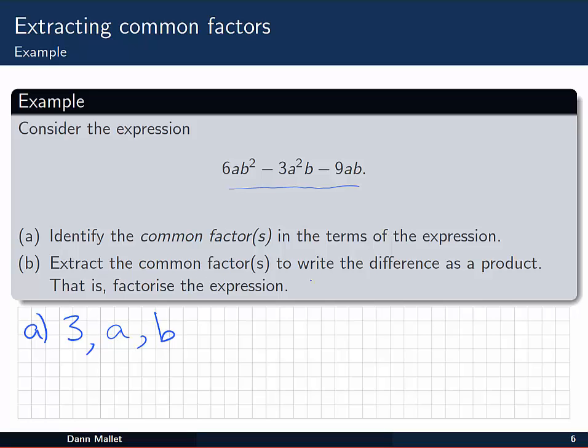Now we're asked to extract the common factors to write the difference as a product. You can do this the same way as the previous example if you like. Or you can just get straight into it. Which is what I'm going to do. And I'm going to say that we've got 3ab outside of. Well I can see I'd need a 2. And another b.